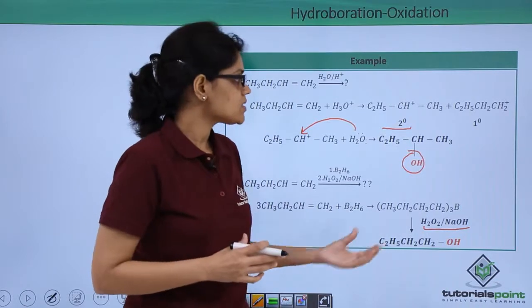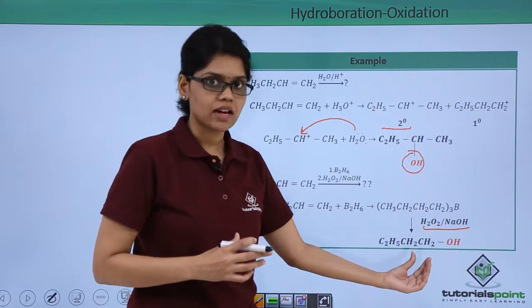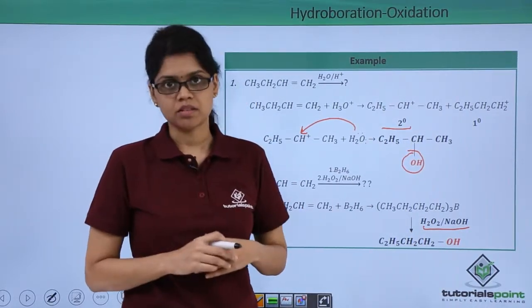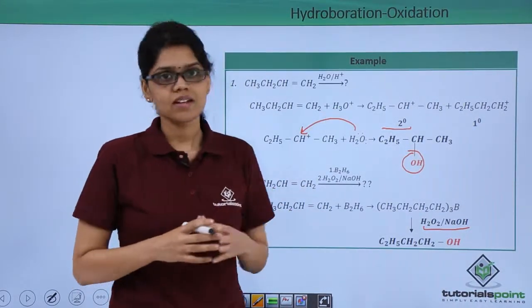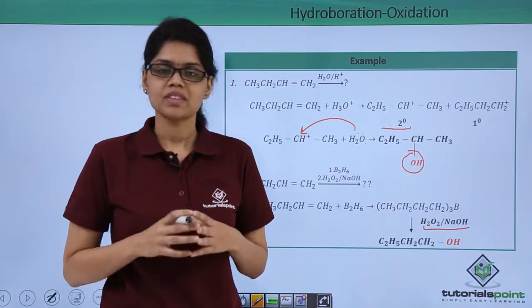Now, you can clearly see the difference between these two alcohols. In this particular alcohol, OH group has attached to that carbon atom which has more number of hydrogen atoms. I hope you are very clear on what are the differences between acid-catalyzed hydration of alkenes as well as hydroboration and oxidation. Thank you.